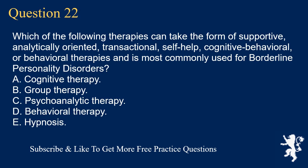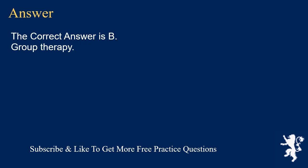Question 22. Which of the following therapies can take the form of supportive, analytically oriented, transactional, self-help, cognitive behavioral, or behavioral therapies and is most commonly used for borderline personality disorders? A. Cognitive therapy. B. Group therapy. C. Psychoanalytic therapy. D. Behavioral therapy. E. Hypnosis. The correct answer is B. Group therapy.